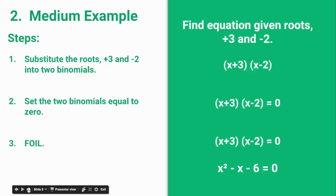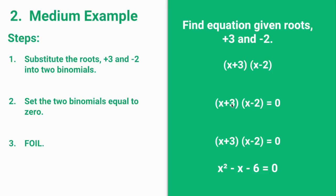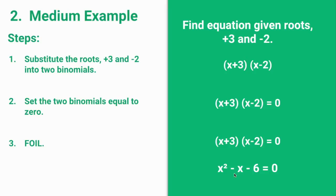The next example is a medium example: find the equation given the roots positive 3 and negative 2. Since x equals 3 and x equals negative 2, we set those equal to 0 to get x minus 3 times x plus 2. Then we FOIL and multiply to get the equation x squared minus x minus 6.